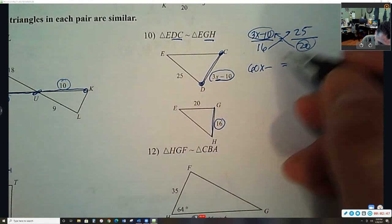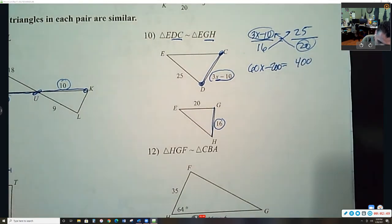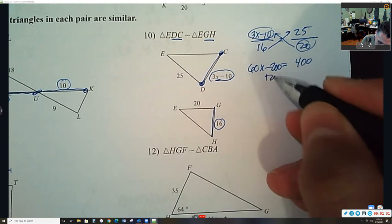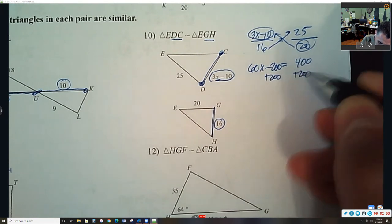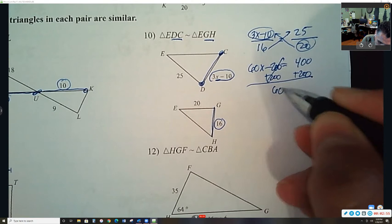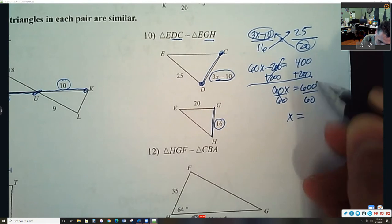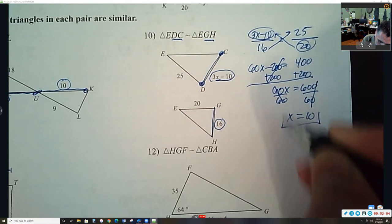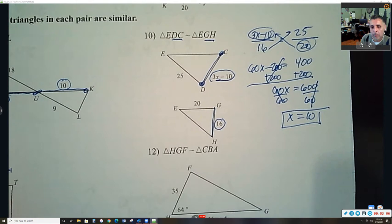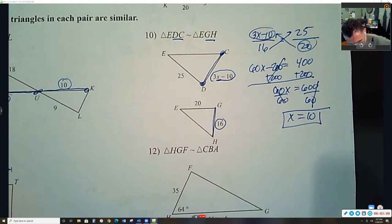Yeah, add 200. Then add 200, add 200, 60x equals 600, divided by 60, divided by 60, x equals 10. Pause that, let's move on.